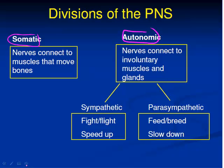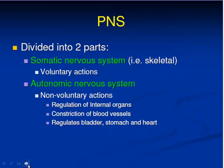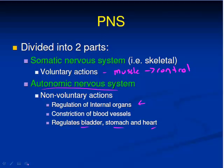The somatic nervous system involves the nerves connected to muscles that move our bones — these are the ones we can control. The autonomic nervous system handles things we can't control, like involuntary muscles such as cardiac muscle and intestinal muscle, as well as our glands. The autonomic also controls our bladder, stomach, and heart — things that are carried out automatically without us having to think about them.